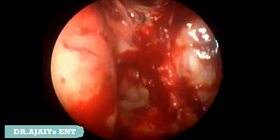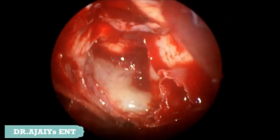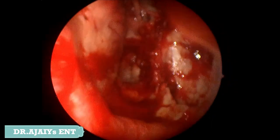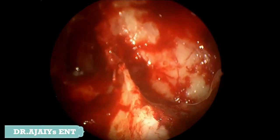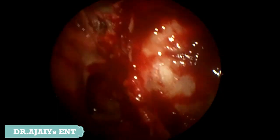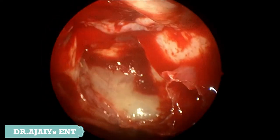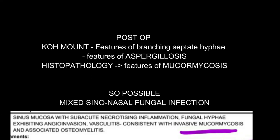This is the final picture post-medial maxillectomy showing the ethmoid area and the lamina papyracea. We removed necrotic contents from the lamina papyracea as well. The palate was normal — the patient presented early, so there was no palate involvement. We sent material for KOH mount and fungal culture. The KOH mount showed branching septate hyphae, features of aspergillosis. However, histopathology showed necrotic contents consistent with mucormycosis. The patient was started on antifungals and is on follow-up.